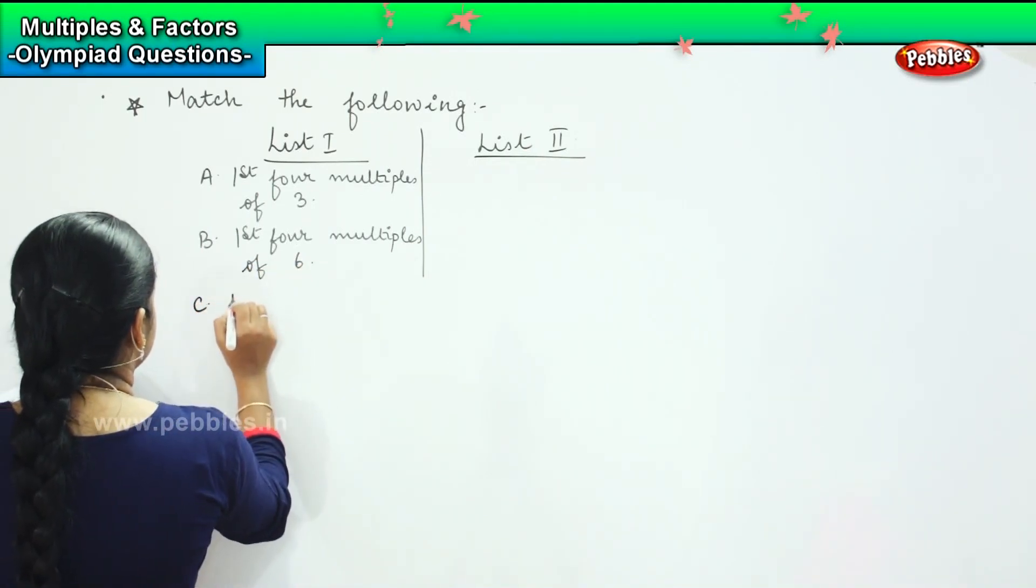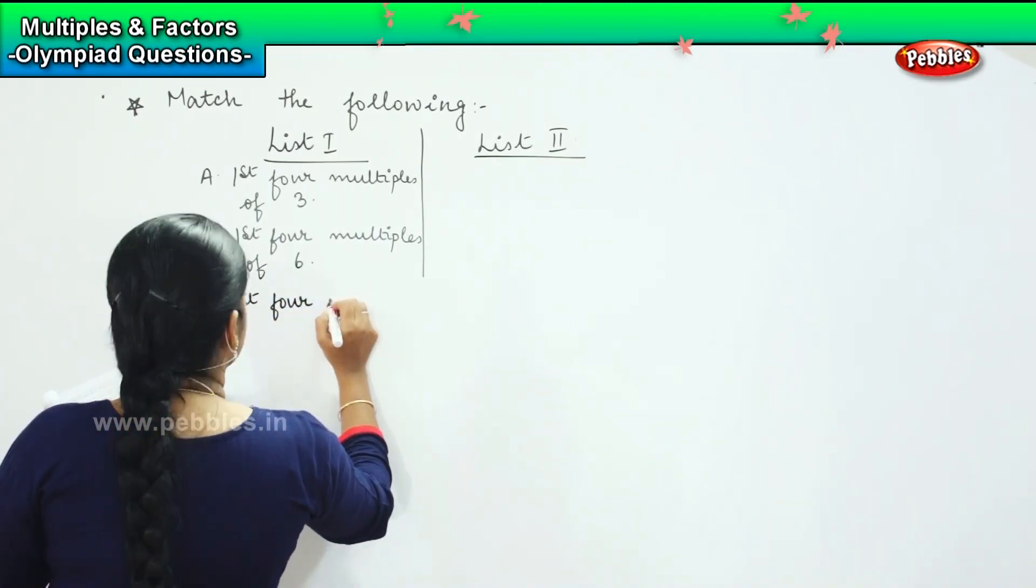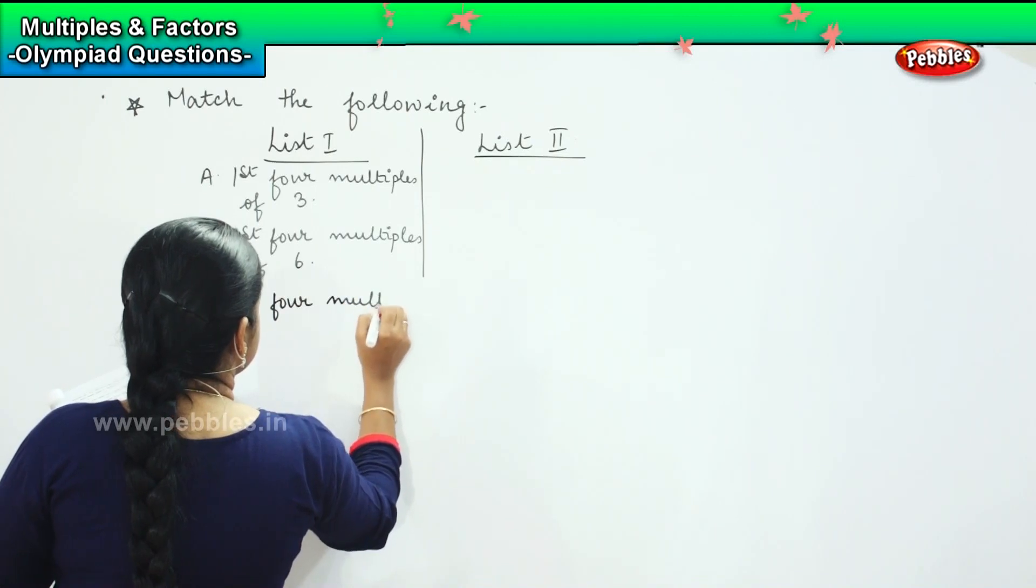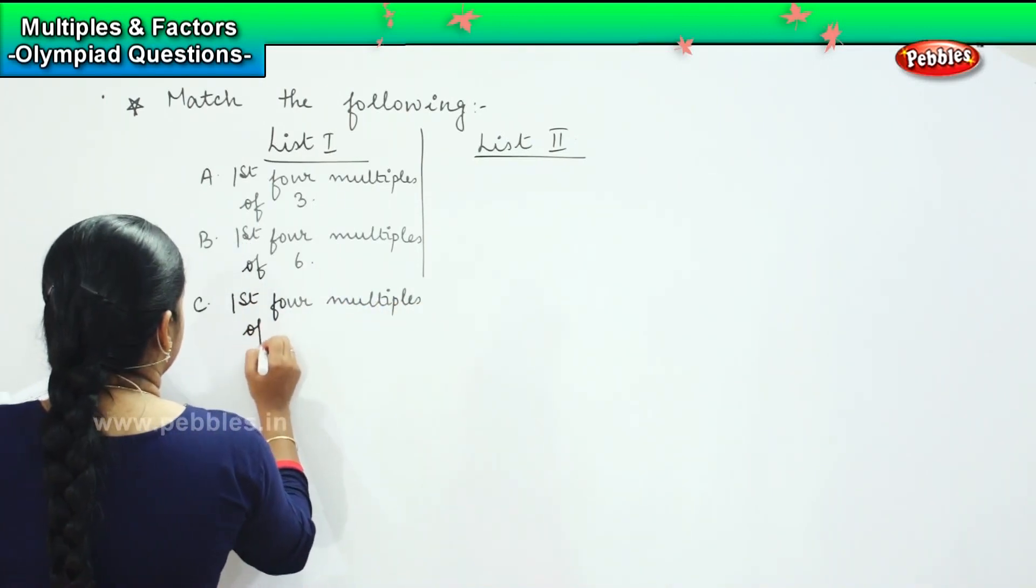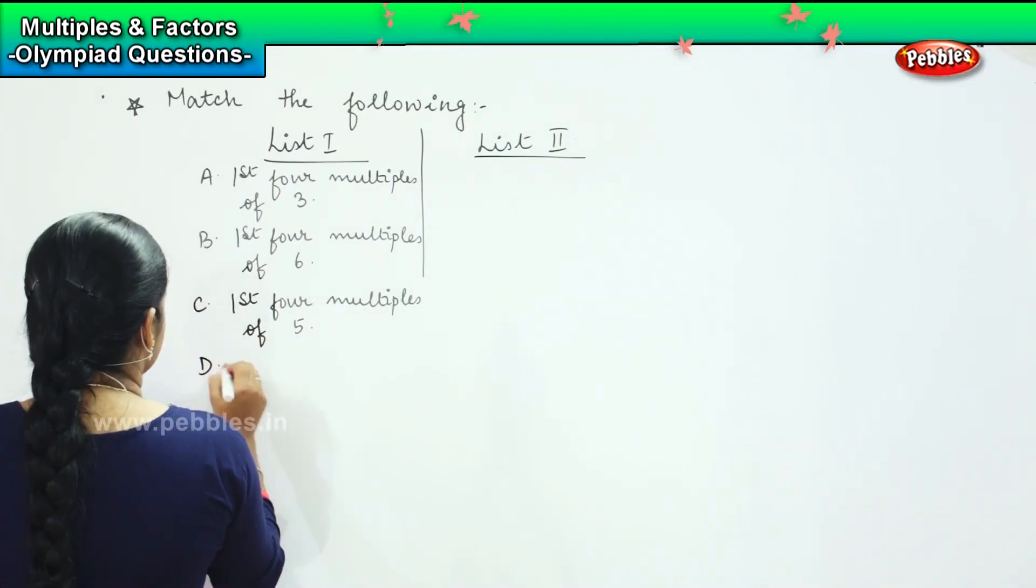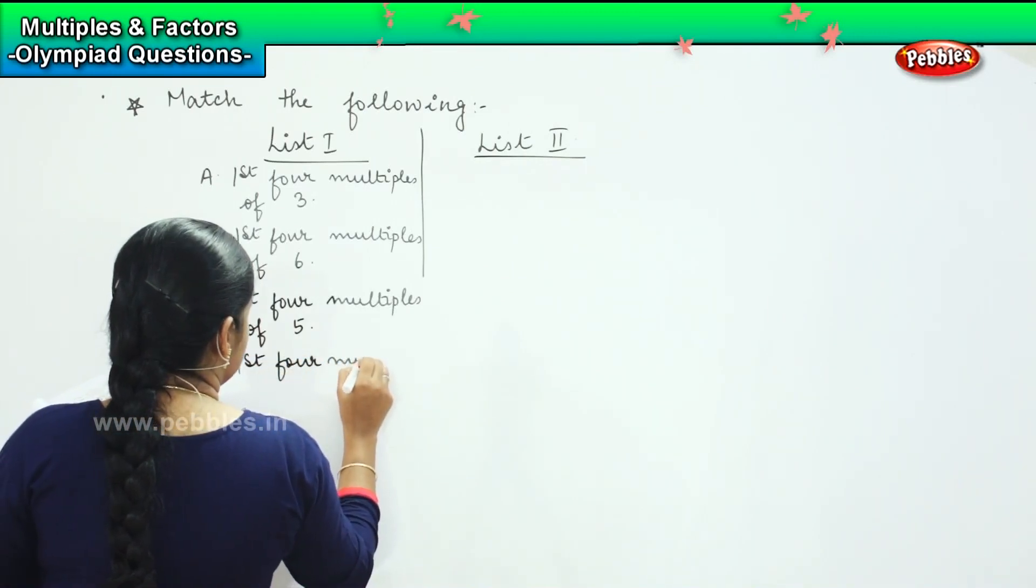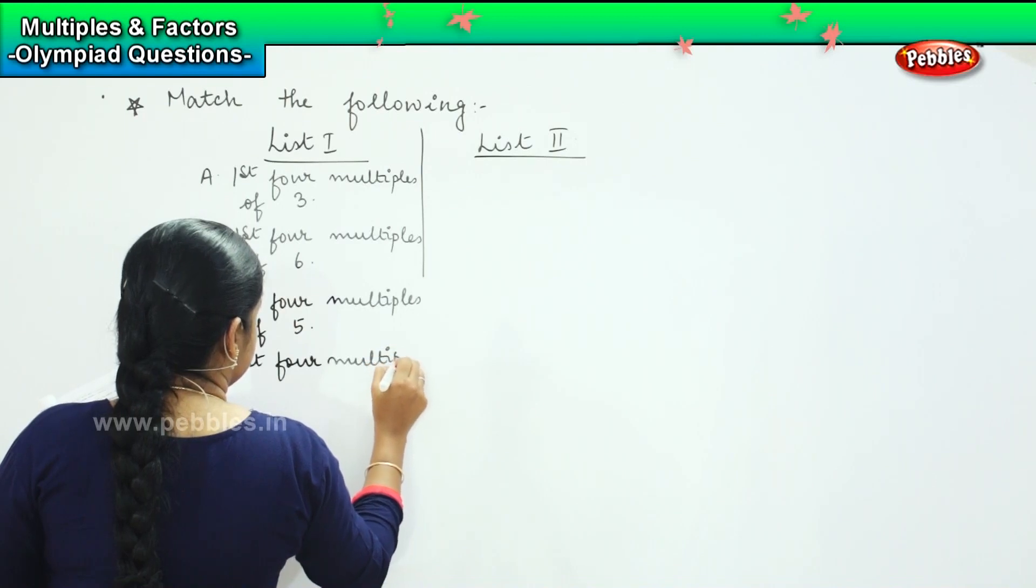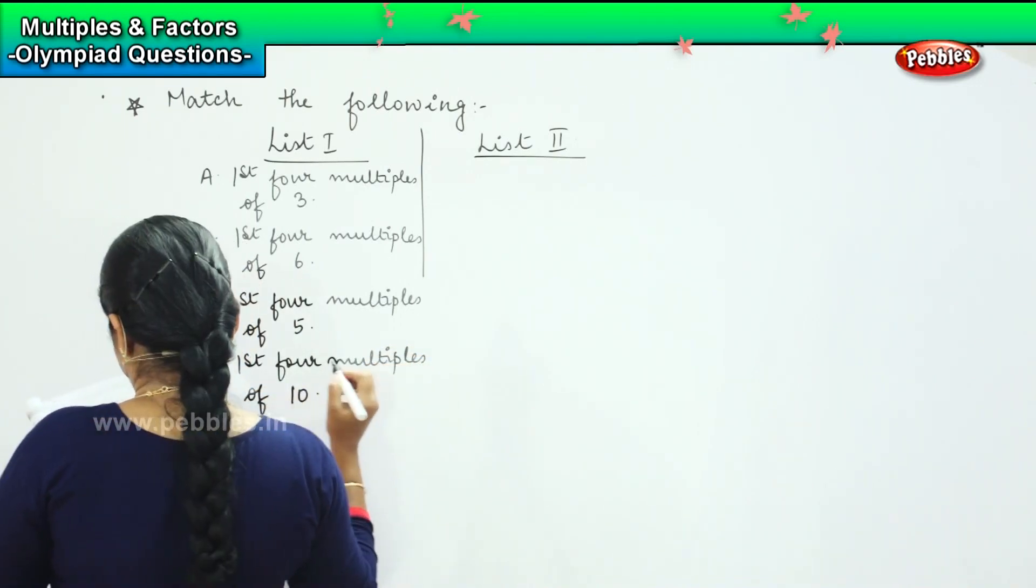C, first four multiples of five. And the next one is first four multiples of ten.